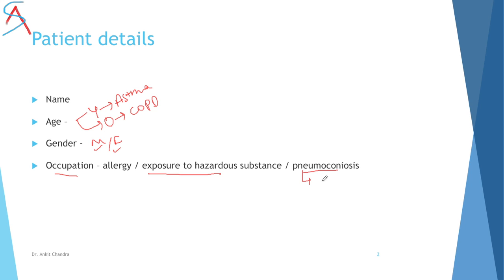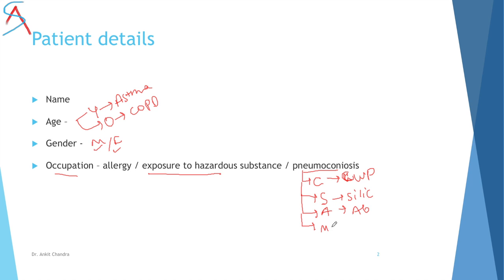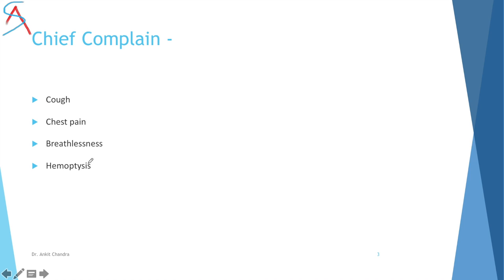In certain occupations there is exposure to hazardous substances. A person working in a coal factory may have coal worker's pneumoconiosis or hypersensitivity. Working with silica may cause silicosis, asbestos exposure may cause asbestosis. Exposure to moldy hay can cause farmer's lung, and sugarcane dust exposure can cause bagassosis.